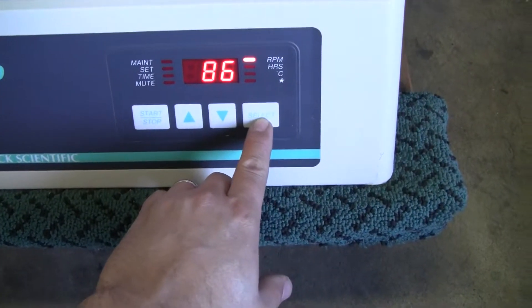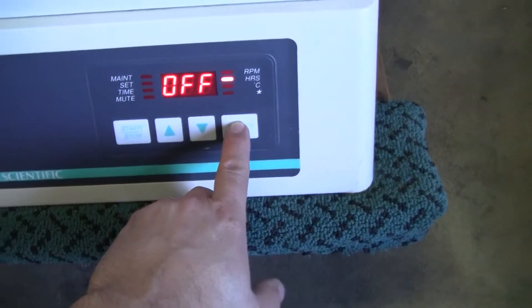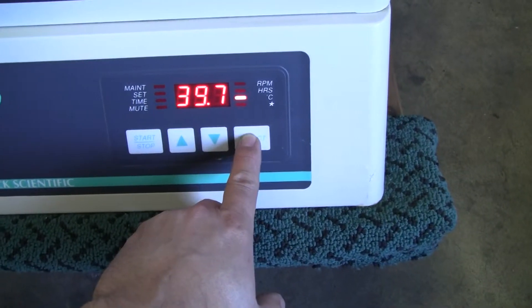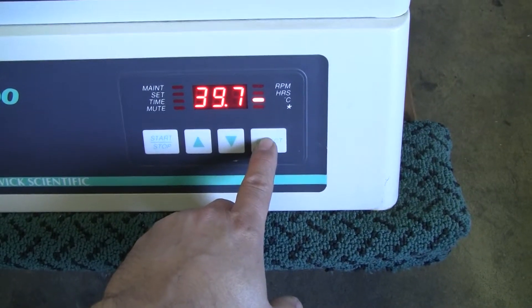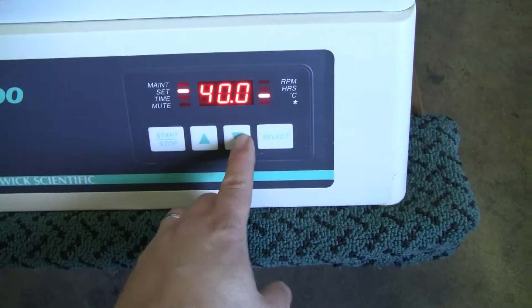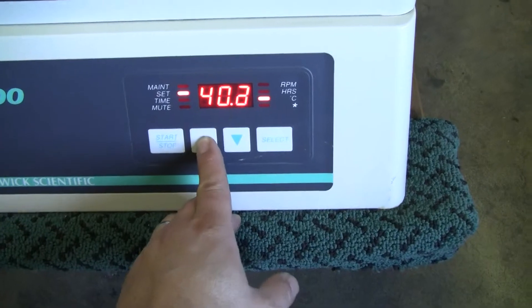I'm scrolling down. You can see the RPMs. I have it set on continuous mode. I have the temperature set at 40 degrees Celsius, so it's holding around there. I can jack it up, and we can see it heat.